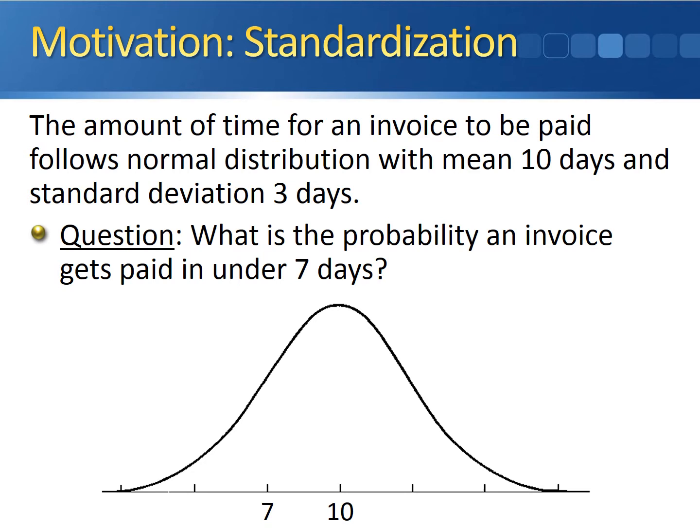Since we want the probability the invoice gets paid in under seven days, we'll shade in all of the area from seven down to the left. This red shaded area is the probability the invoice gets paid in seven days or less.